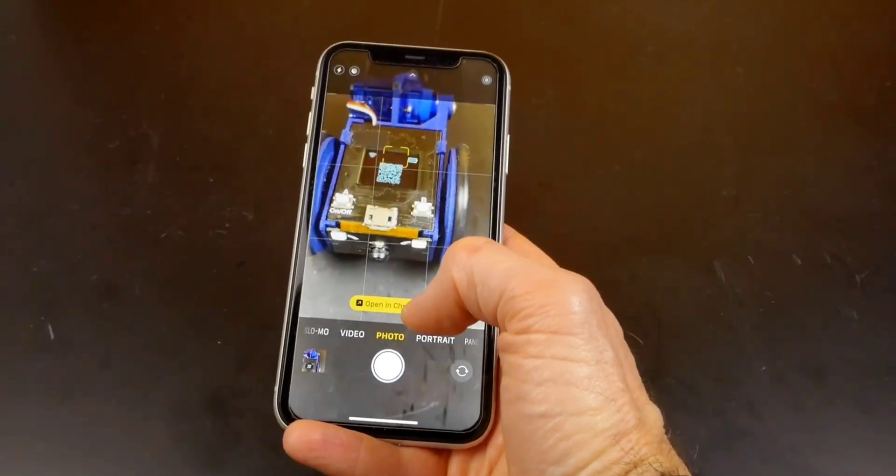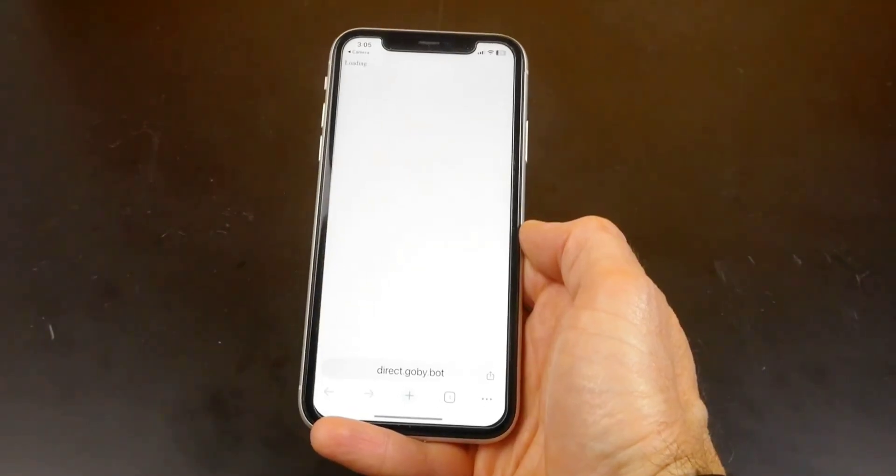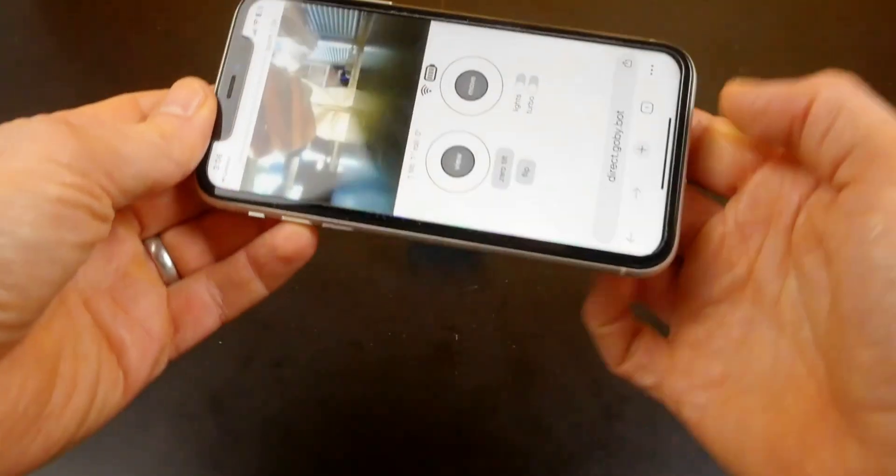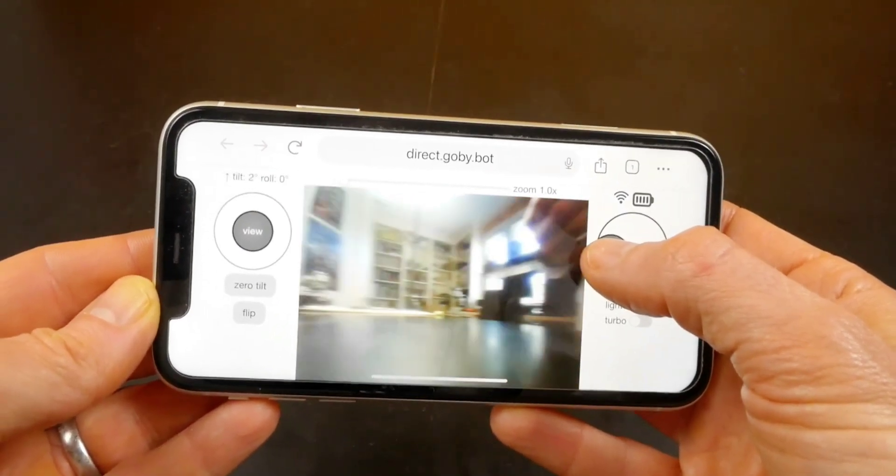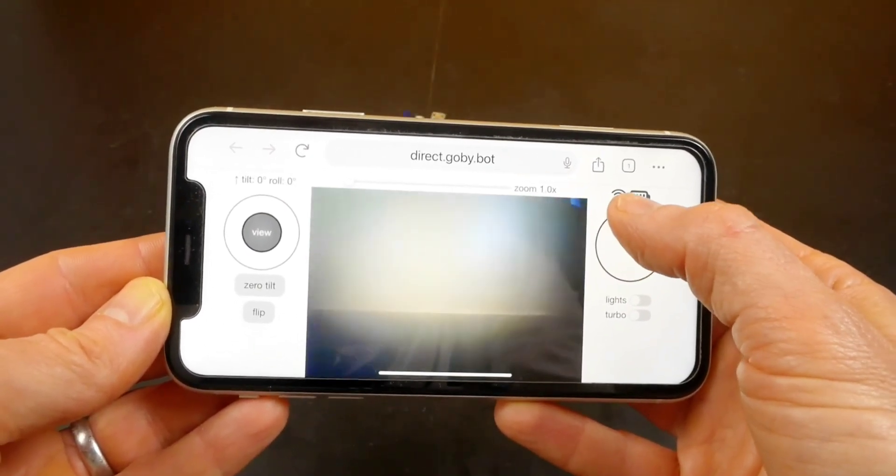Named after a feisty little fish, the Gobi was designed by software engineer Richard Legrand and colleagues at Austin, Texas-based company Charmed Labs. Among other things, the firm previously brought us the diminutive Pixi and Vise video cameras.